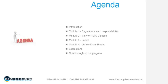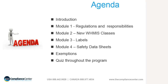We will start our program with an introduction, followed by four modules. In Module 1, we will take a look at regulations and responsibilities. In Module 2, we will learn the new WHMIS classes. Module 3 covers the labels, and Module 4 covers the safety data sheets. We will end the program with some exemptions. There will be quiz questions throughout the program, and once you obtain an 80% or better answering the quiz questions, a certificate of completion will be available to you, which your employer can then certify.